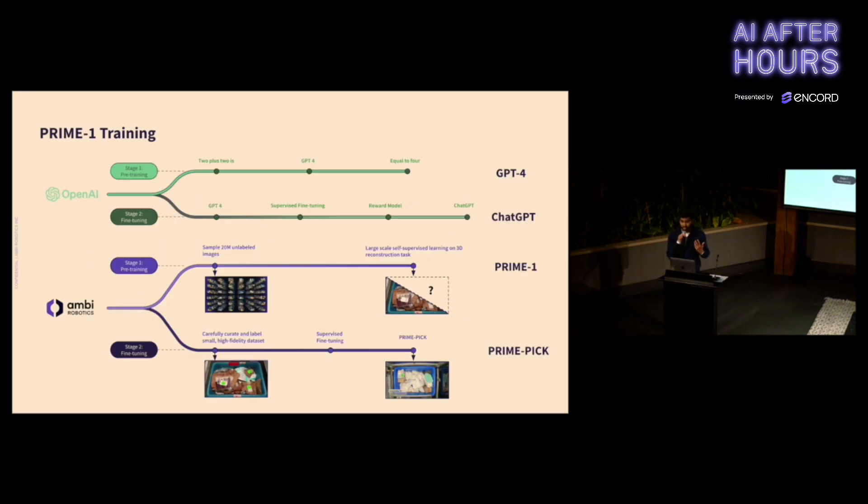A natural way to approach this is something like ChatGPT. You can think of the ChatGPT training as in two stages. We have this initial pre-training where we train the GPT-4 base model. And then we have the fine-tuning stage where we tune it towards chat-like responses and get ChatGPT. Our Prime training follows that same paradigm. In the initial pre-training stage, we sample 20 million unlabeled images. Then we run this large-scale self-supervised learning on a 3D reconstruction task. The 3D reconstruction task is key because it forces our base model to learn strong 3D priors.